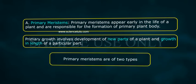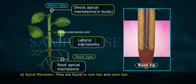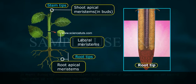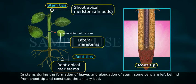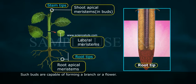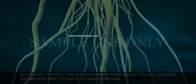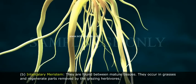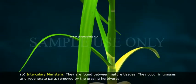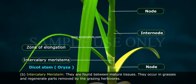Primary meristems are of two types. A. Apical meristem — they are found in root tips and stem tips. In stems, during the formation of leaves and elongation of stem, some cells are left behind from the shoot tip and constitute the axillary bud. Such buds are capable of forming a branch or a flower. B. Intercalary meristem — they are found between mature tissues. They occur in grasses and regenerate parts removed by the grazing herbivores.